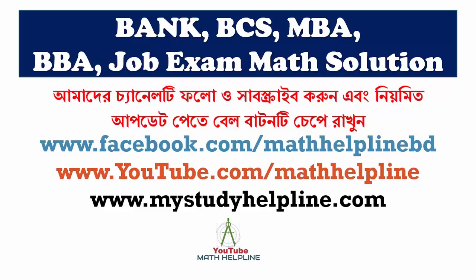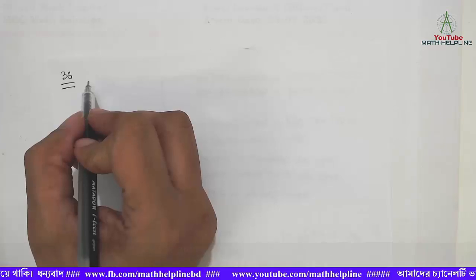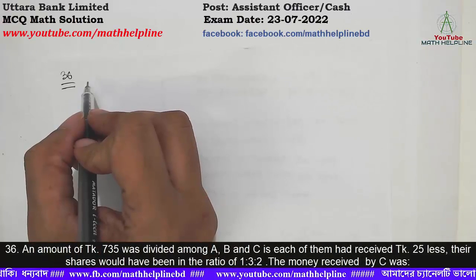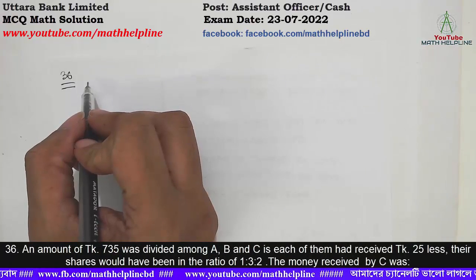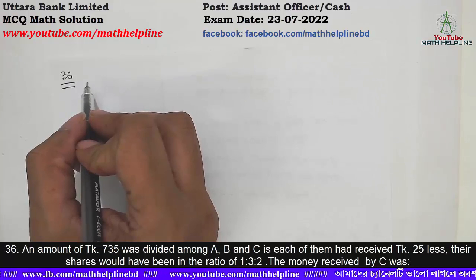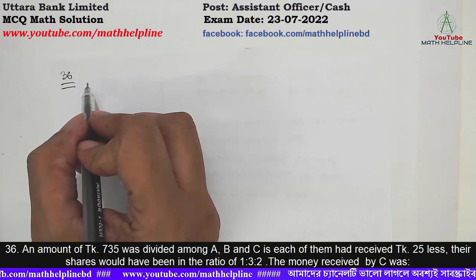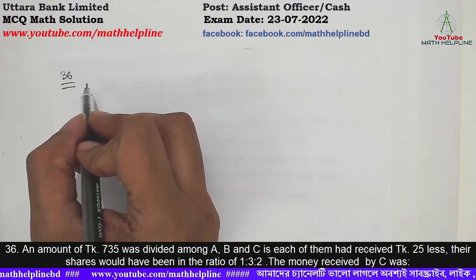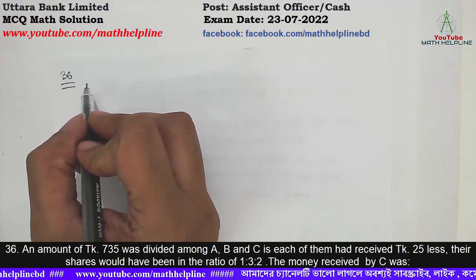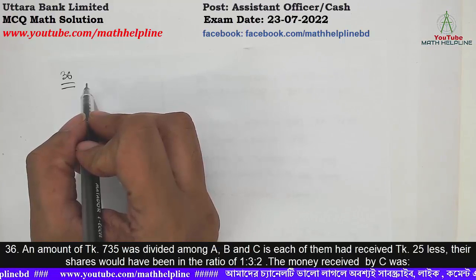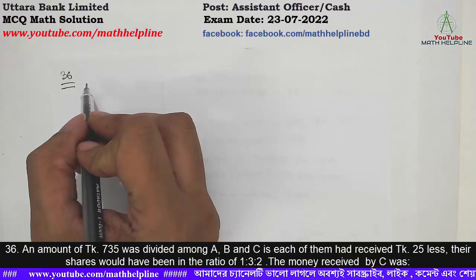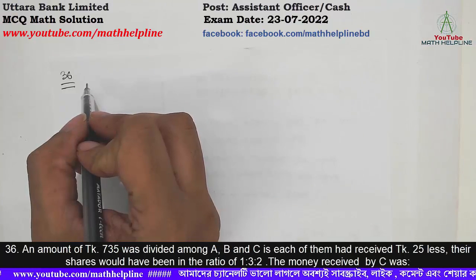We upload math solution videos for exam preparation. Problem number 36: An amount of Taka 735 was divided among A, B and C. If each of them had received Taka 25 less, their shares would have been in ratio of 1 is to 3 is to 2. The money received by C was?